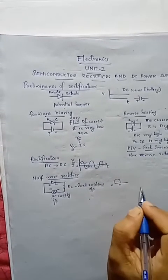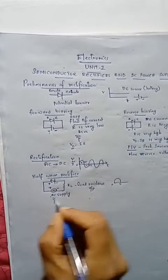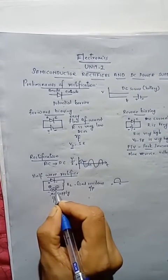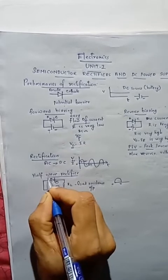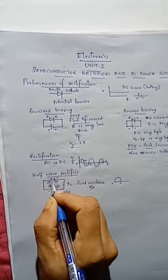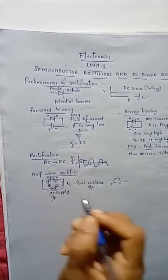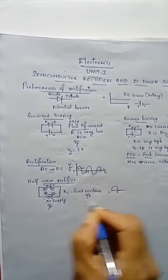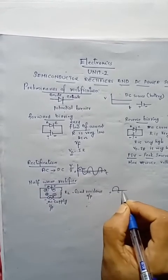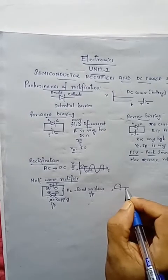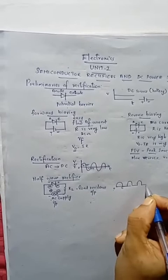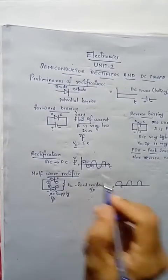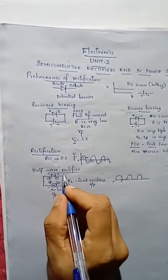After a particular time interval, the polarity suddenly changes: this end becomes negative and the other becomes positive. So the polarity at the diode also changes — the anode is connected to negative and the cathode to positive — so the diode is reverse biased. Practically there is no current flowing through the load resistance. Since the diode conducts only during one half cycle of the input AC, this is known as a Half Wave Rectifier.